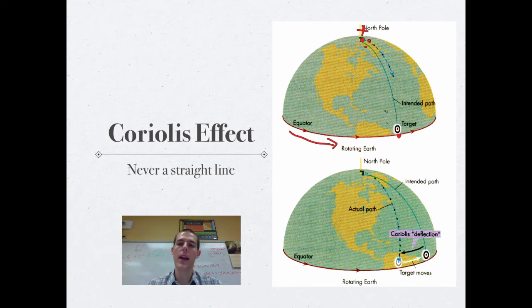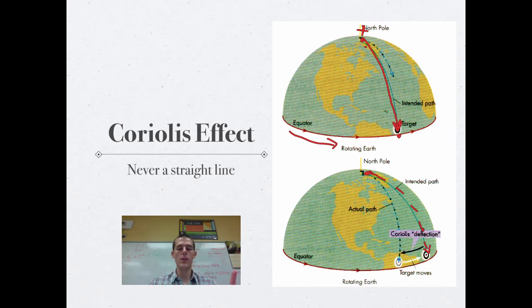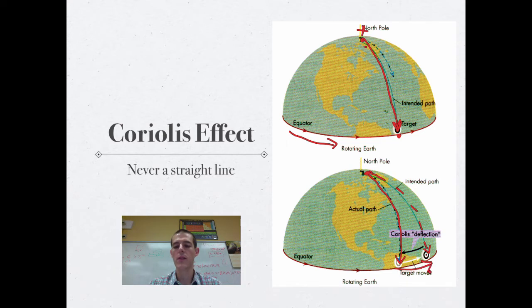If the Earth were not spinning and you were standing at the North Pole and threw a ball towards the equator, it would follow a straight line, because the Earth isn't moving. But because the Earth is moving, if you take that same ball and throw it in what you think is a straight line — aiming for a target — because the Earth is moving underneath the ball, the path of your ball will actually curve, and your ball will land in a different place because the Earth is spinning the whole time and your target has actually moved to the side.